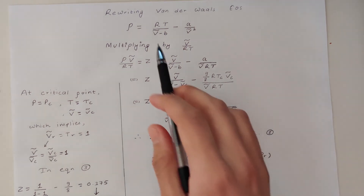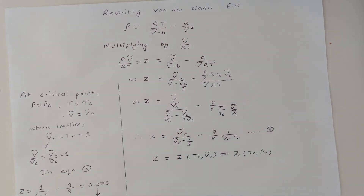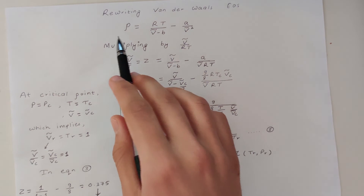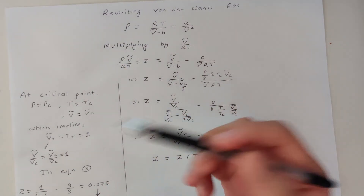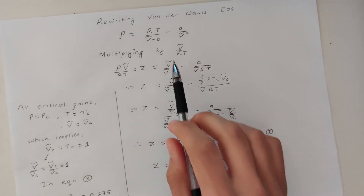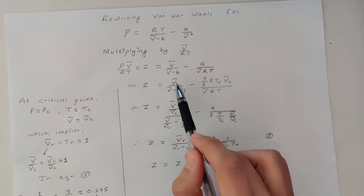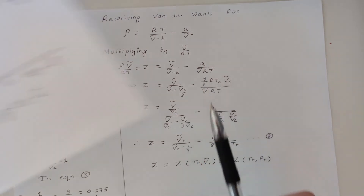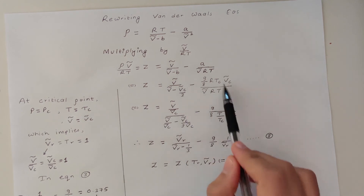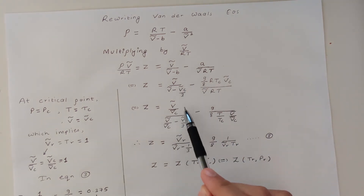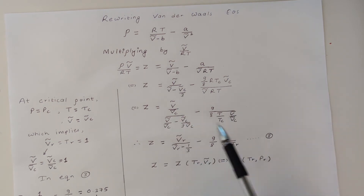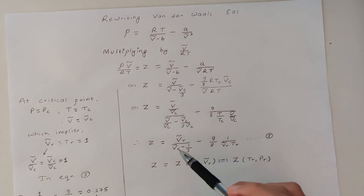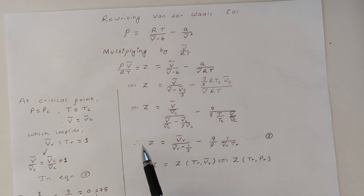Now we convert the van der Waals equation of state into a form involving compressibility factor. Multiplying the expression by V over RT gives PV over RT, which is defined as Z, the compressibility factor. Substituting the values of b and a obtained earlier, and multiplying and dividing by 1 over Vc, we can rearrange to get terms like V over Vc and T over Tc. These are the reduced volume and reduced temperature, so the final expression shows that Z is only a function of reduced volume and reduced temperature.